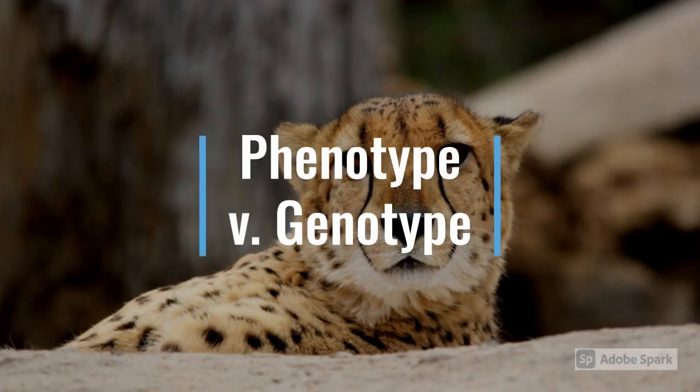In case you don't know what a phenotype and a genotype are, a phenotype is the physical expression of a genotype. The phenotype may or may not reflect your genotype. For instance, if you have brown eyes, that is your phenotype. However, your genotype may be that you have two brown eye alleles, or it could mean that you have a dominant brown eye allele with a recessive allele, say a green eye allele.